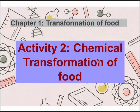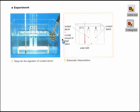Now starting with activity two, called the chemical transformation of food. This lesson begins with an experiment to answer the question: why do we taste sweetness when we chew a piece of dry bread for a while? We know sweet taste comes from sugar, so we can hypothesize that the starch in bread, when chewed in our mouth, changes to sugar.